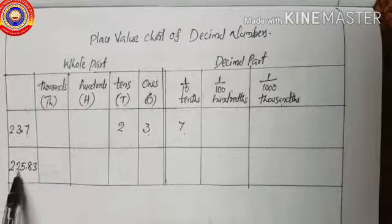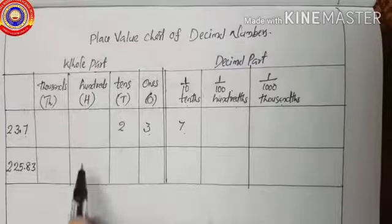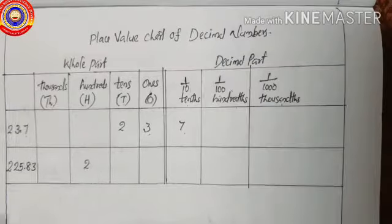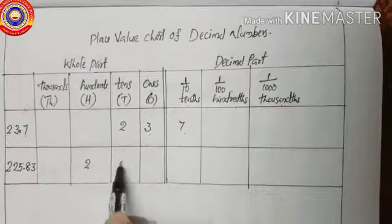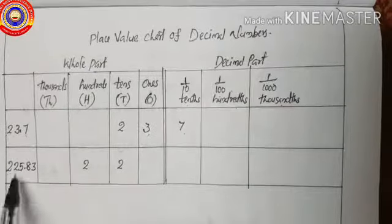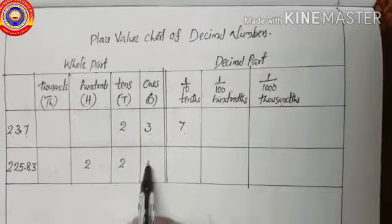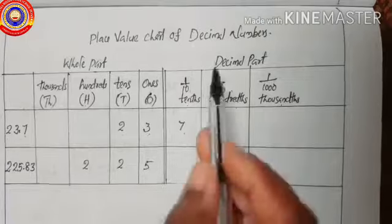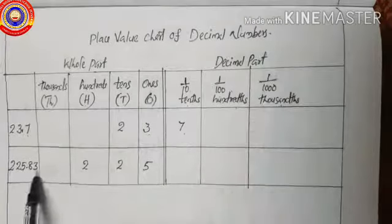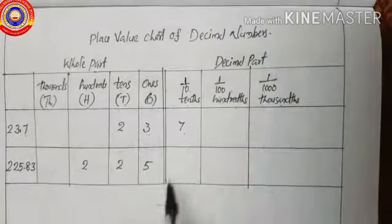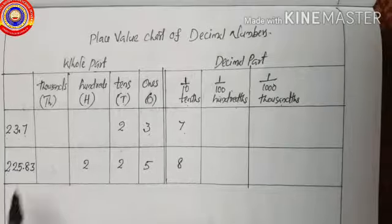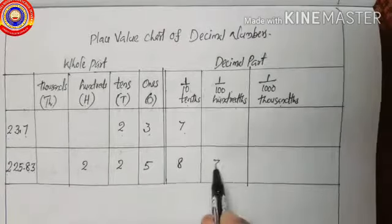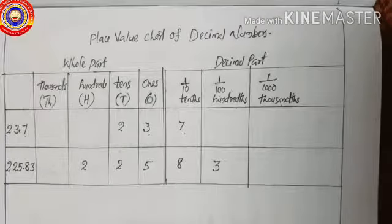Next example: 225.83. We put 2 in the hundreds place, 2 in the tens place, and 5 in the ones place. For the decimal part, 8 is in the tenths place and 3 is in the hundredths place.